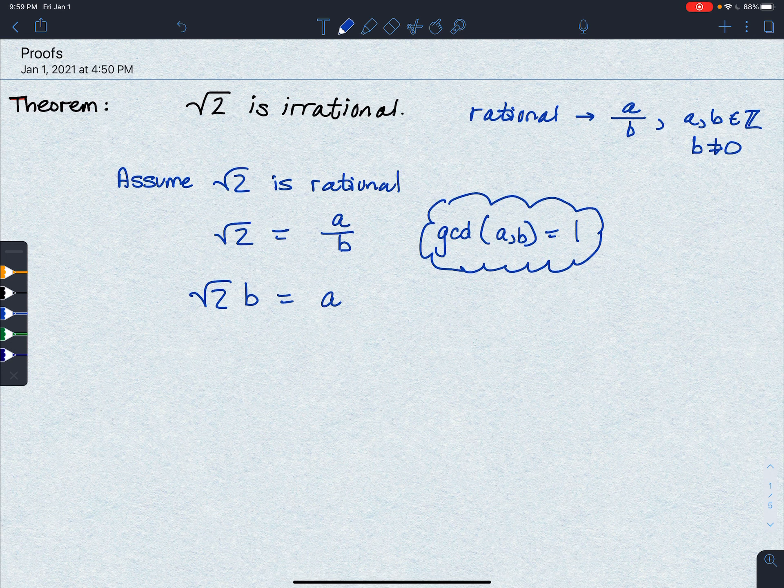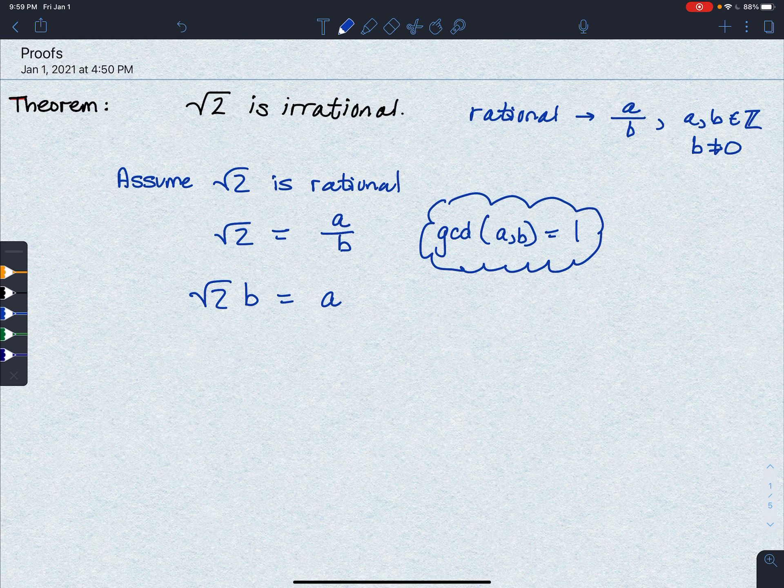And, you know, it seems logical to square both sides. So if we square both sides, we get, well, the square root of 2 squared is 2, b squared is equal to a squared.